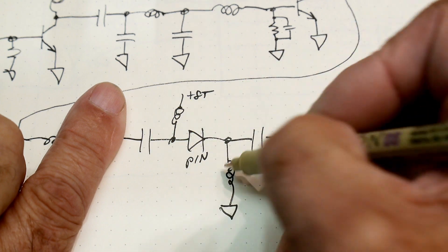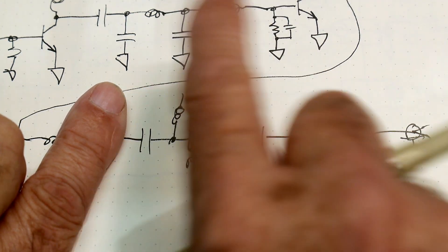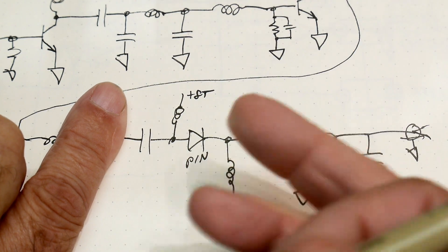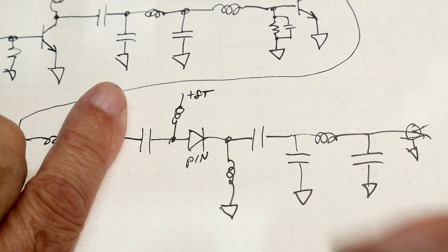So things cannot flow through here unless that diode is biased on. That diode is biased on through a couple inductors to keep RF out. And then this is controlled with plus 8T, which is the voltage that's high only during transmit.